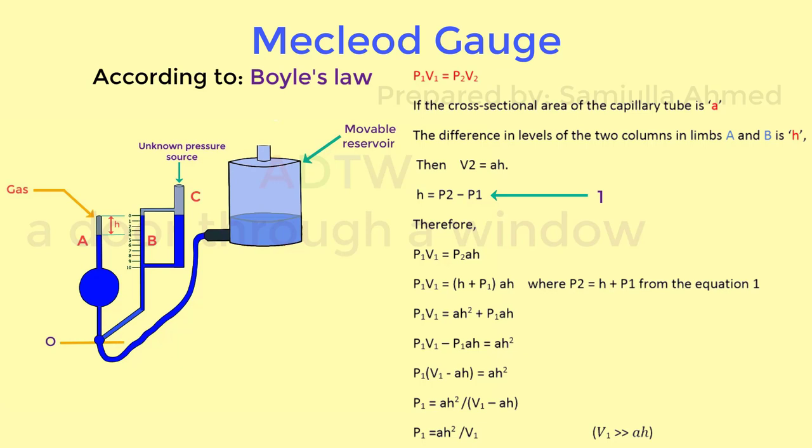With this equation, we can find out the vacuum pressure of the system to which the McLeod pressure gauge is connected. Hope you have understood the working of the McLeod pressure gauge.